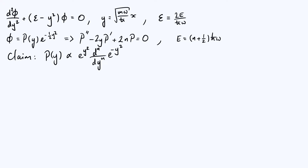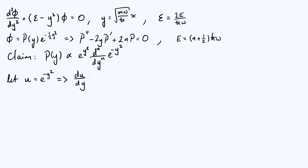The way we're going to approach this proof is to build up that complicated-looking expression bit by bit. We start by letting u of y be defined as e to the minus y squared — that's the thing we're differentiating n times in our proposed expression for p of y. We're going to find a second order differential equation obeyed by u, and the way to do that is to differentiate it once. So du by dy is minus 2y times e to the minus y squared, which I'll just write as minus 2y u.